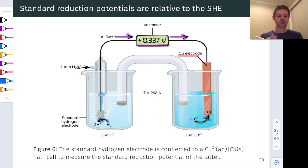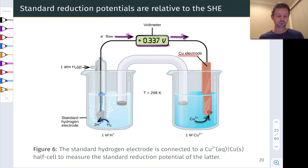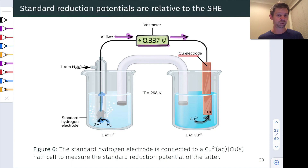And notice here as well, we're at standard state in both half cells — one molar H⁺, one atmosphere H₂, and one molar Cu²⁺. And the temperature is 298 Kelvin. Temperature does exert an effect on cell potential that we'll encounter later.